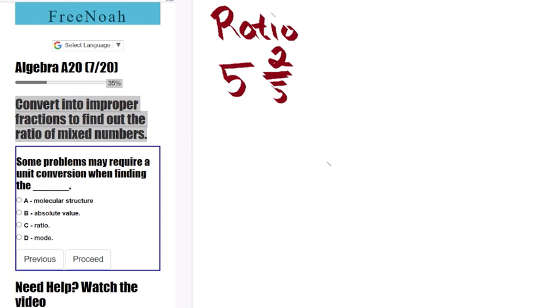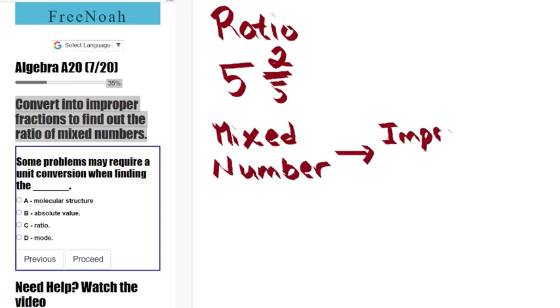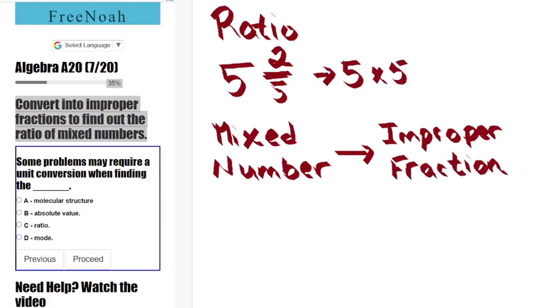Ratio. We have a mixed number of 5 wholes and 2 over 5. Mixed number into improper fraction. So let's start the conversion here. We have 5 times 5 giving us 25, then we're going to add 2. 25 plus 2 is 27. And we're just going to simply copy the denominator, 5.